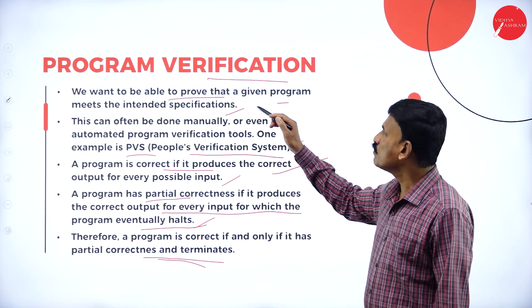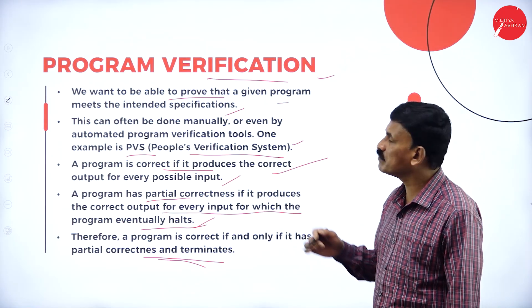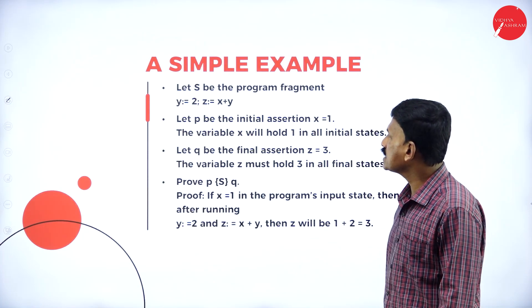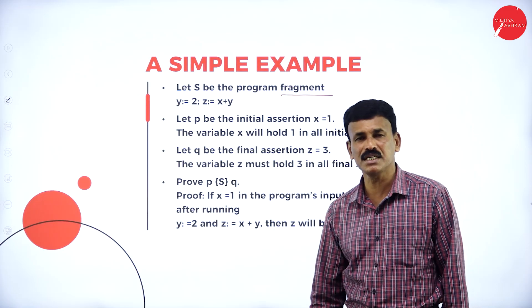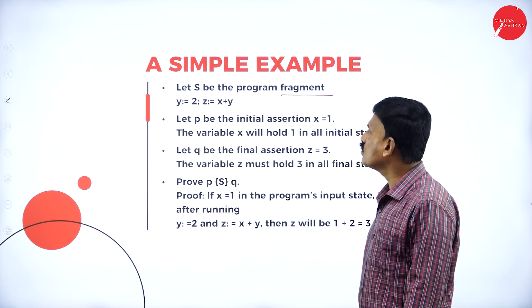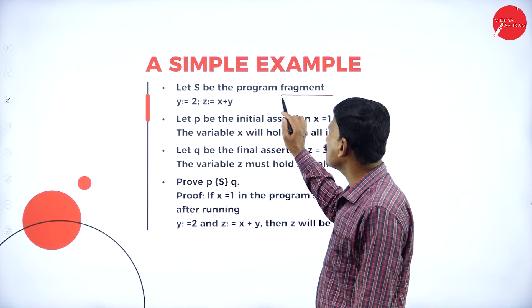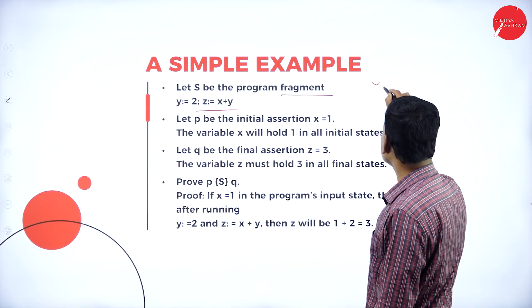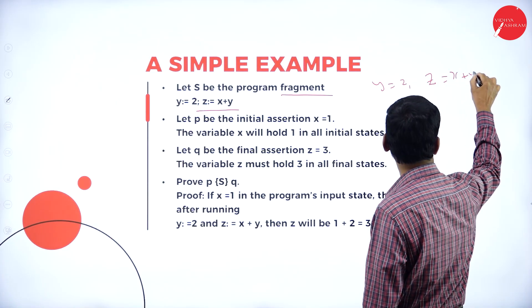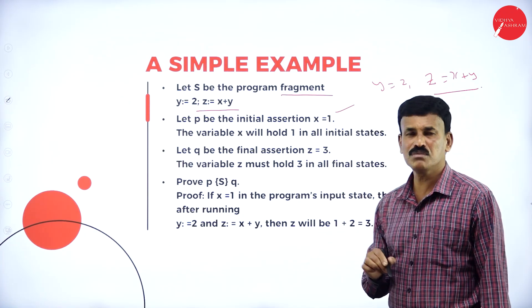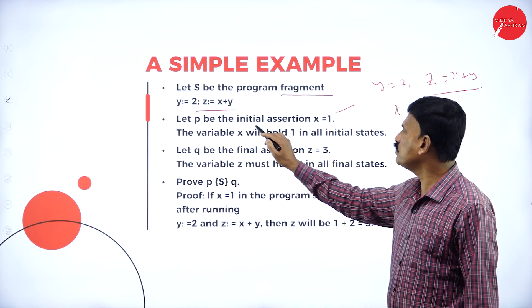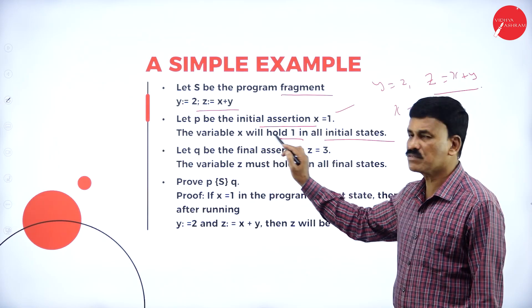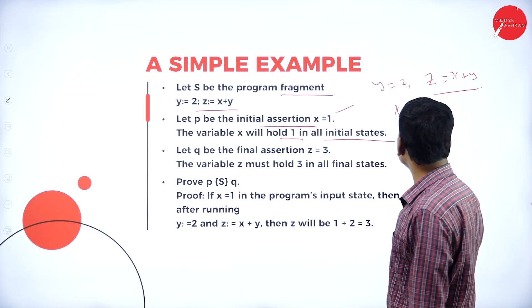These are the key points for program verification. Let us take a simple example of program fragment verification. Let S be the program fragment where Y = 2 and Z = X + Y. Let P be the initial assertion: X = 1. The variable X will hold 1 in all initial states.